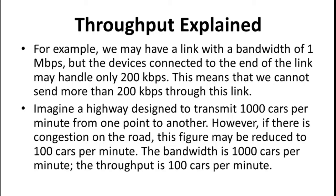This can be compared to a highway which is designed to transmit 1000 cars per minute from one point to another. However, if there is congestion on the road, this figure can be reduced to 100 cars per minute. So the bandwidth is 1000 cars per minute but the throughput is only 100 cars per minute.